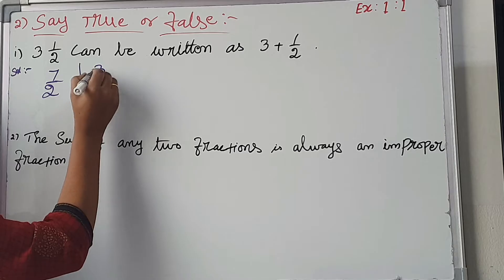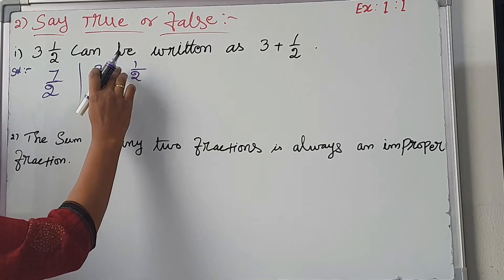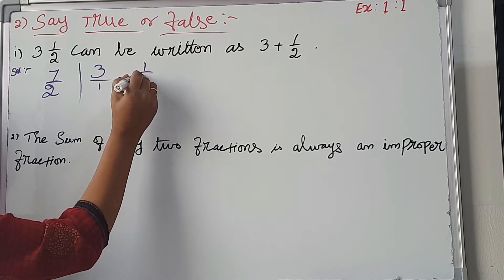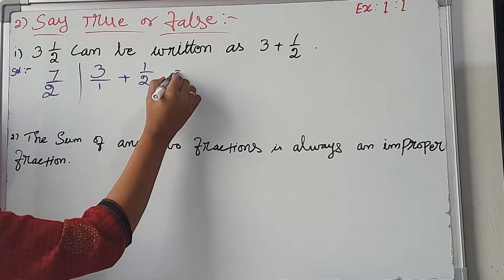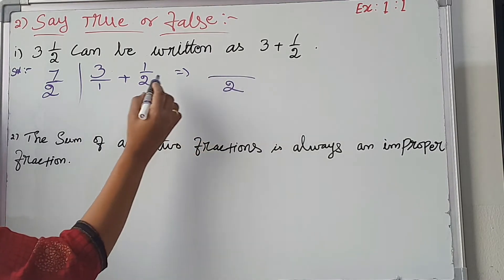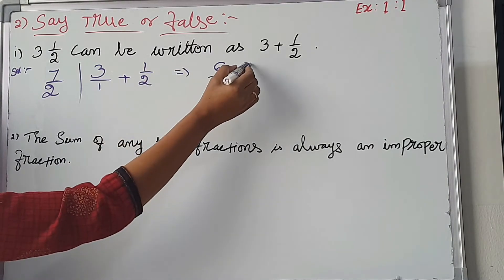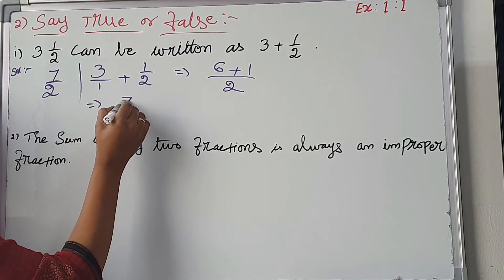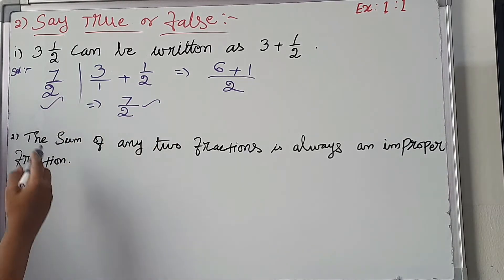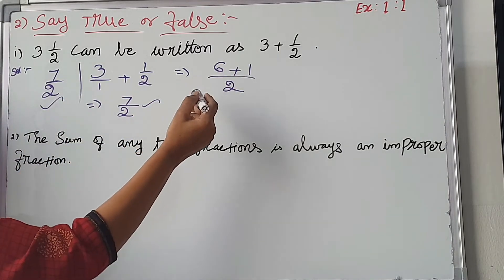3 plus 1 by 2. The denominator multiplied gives 6 plus 1 by 2. What we have done is 6 plus 1 is 7 by 2. This is 7 by 2. So 3 and 1 by 2 can be written as 3 plus 1 by 2. The statement is true.